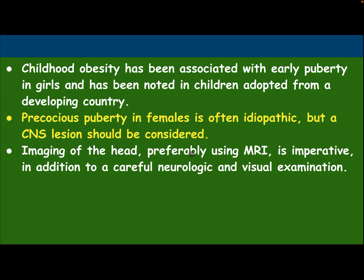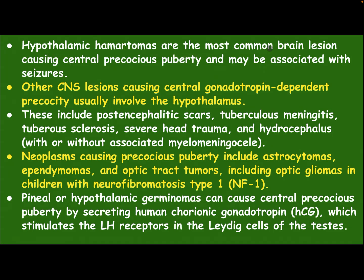Imaging of the head, preferably using MRI, is imperative in addition to careful neurological and vision examination. Hypothalamic hamartomas are the most common brain lesions causing central precocious puberty and may be associated with gelastic seizures. Other CNS lesions causing central gonadotropin-dependent precocious puberty usually involve the hypothalamus, including post-encephalitic scar, tuberculous meningitis, severe head trauma, and hydrocephalus with or without associated myelomeningocele. Neoplasms causing precocious puberty include astrocytomas, ependymomas, and optic tract tumors including optic gliomas in children with neurofibromatosis type 1.